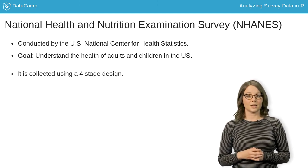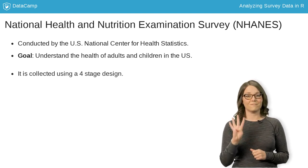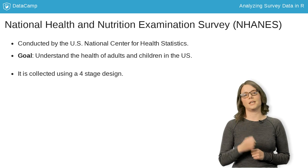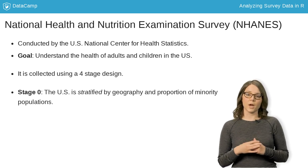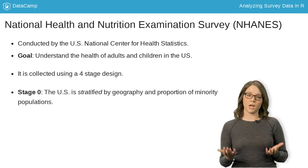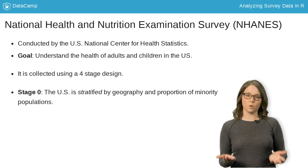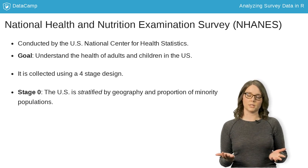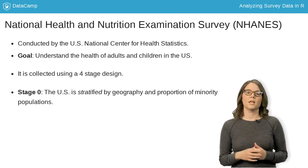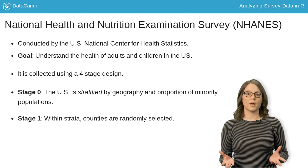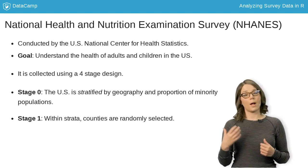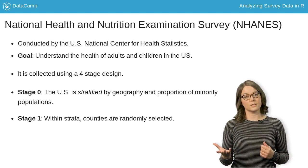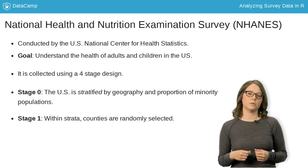The data are collected in four stages. First, the U.S. is stratified by geography and distribution of minority populations. Then, counties are randomly selected within each stratum, where more populated counties are more likely to be sampled.